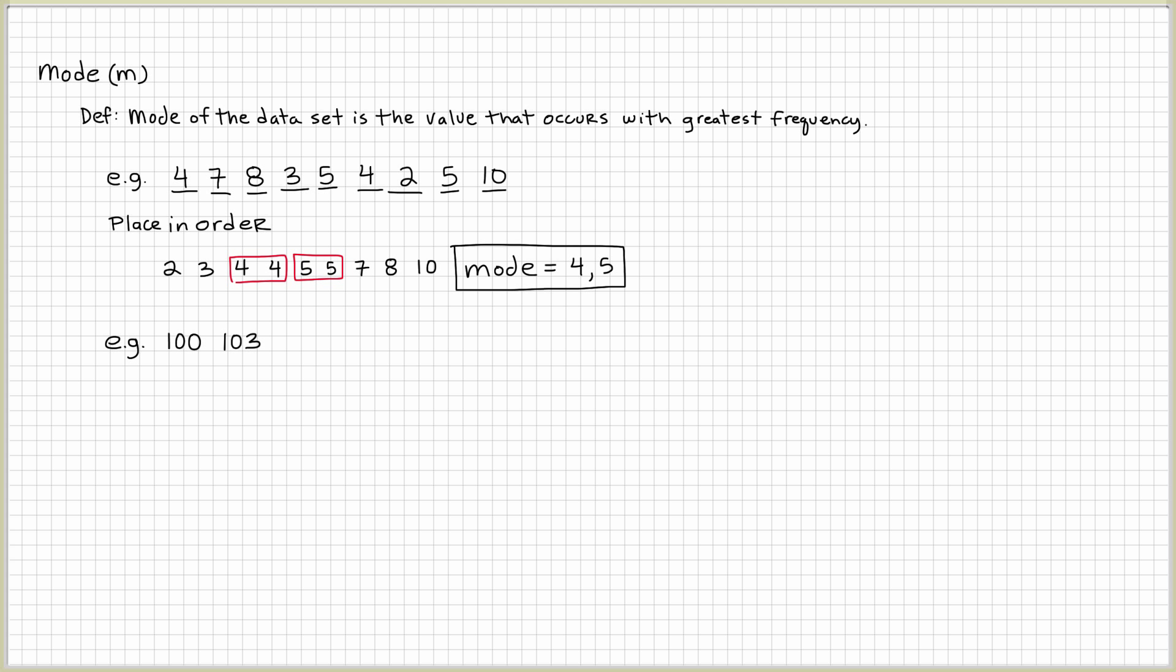All right, let's do another example. Let's say we have this data set right here. And this one we're going to find the mode differently, just a little different.